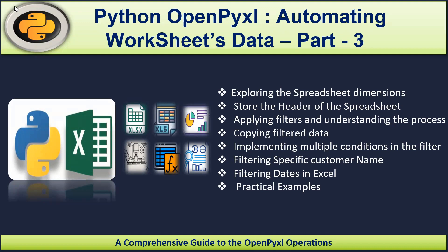Hello everyone, welcome back. This is part 3 of OpenPyExcel, where we will explore how we can automate certain tasks in Excel using Python's openpyxl module. In this session we will discuss how to explore spreadsheet dimensions, duplicate or store the header, apply filters on certain columns, filter copied data, apply multiple filters, and filter by specific customer names and dates.